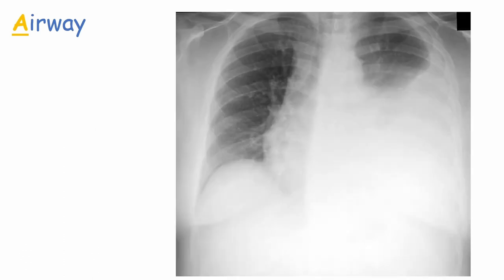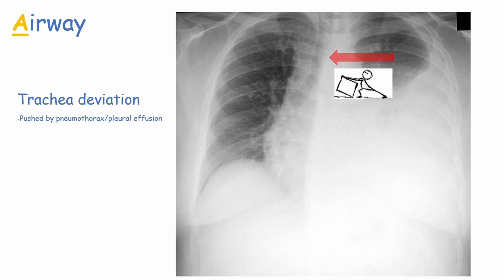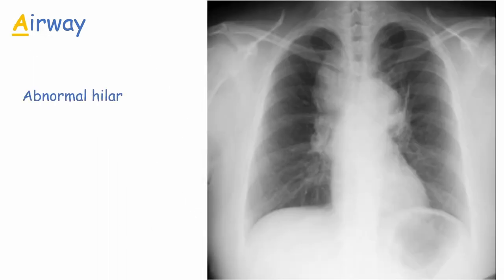This image shows a trachea that is deviated to the right, in this case caused by a large pleural effusion. We can tell it's a pleural effusion because it has a meniscus where the fluid level appears as a curve. The trachea can be pushed by an area of increased pressure, for example a pneumothorax or a pleural effusion, or it can be pulled by an area of decreased pressure, usually a lobe collapse. Hila regions can be unilaterally enlarged, for example in cancers, or bilaterally enlarged as in this chest X-ray, often associated with sarcoidosis.